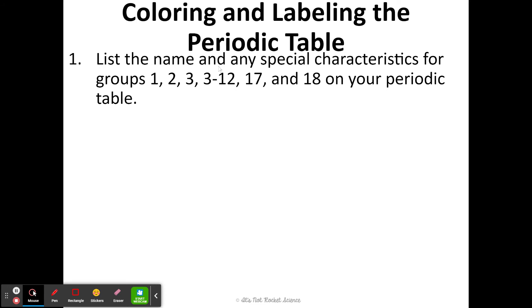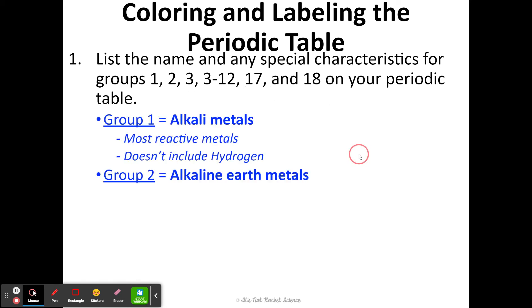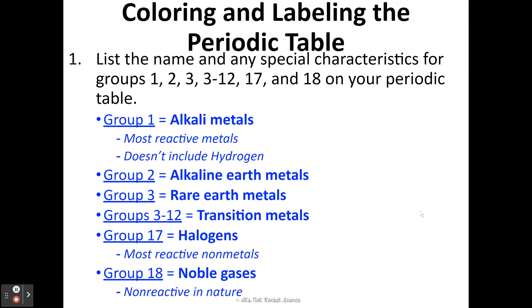We are going to list the name and any special characteristics for our groups on the periodic table, and there are 18 groups. Group one we're going to label as alkali metals — they are the most reactive metals. In group one, hydrogen is not an alkali metal; it is actually a non-metal. Group two we're going to label as alkaline earth metals. Group three are your rare earth metals. And then groups three through twelve are going to be your transition metals. The next-to-last column are your halogens, and then group eighteen are your noble gases.